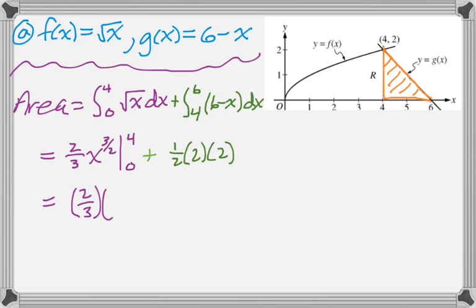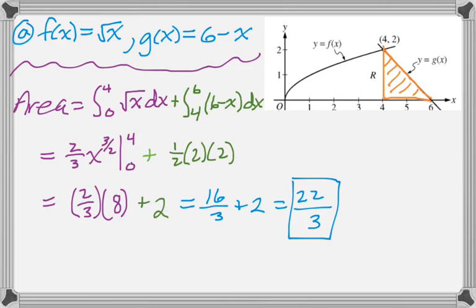So here I get 2 thirds. And then when I plug in 4, I have to take the square root, which is 2, and then cube it, which gives me 8. So that. And then plus that simplifies down to 2. So the area I'm looking for is 16 thirds plus 2, which is 22 thirds. And that's the whole deal.